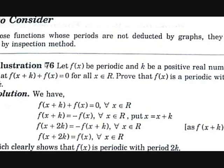Let's take an example. Let f(x) be a periodic function and k be a positive real number such that f(x + k) + f(x) = 0 for all x belonging to real numbers. Then prove that f(x) is periodic with period 2k.